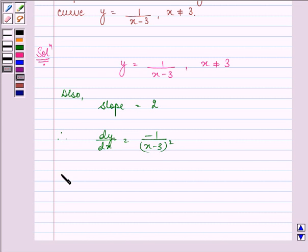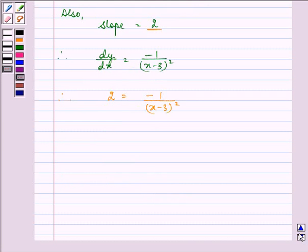And we can equate it to the slope 2. So we have 2 equals minus 1 over (x minus 3) squared. Or we can say that (x minus 3) squared equals minus 1 over 2.